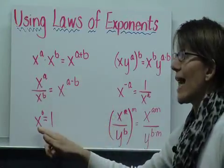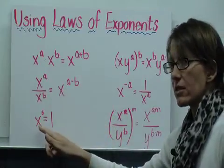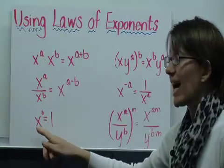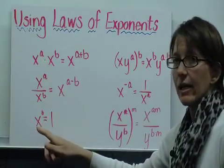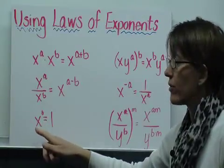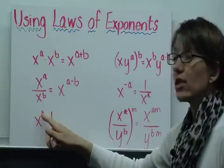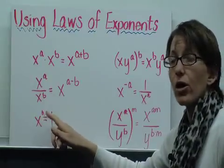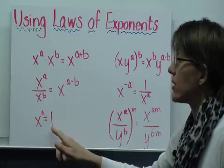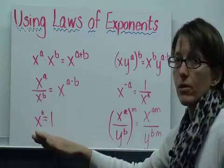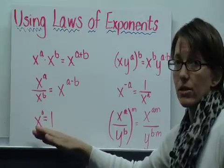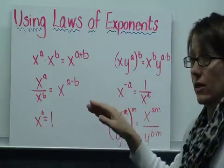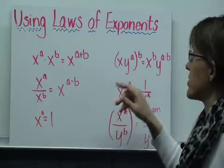Of course, any base — 2, 3, pi, negative square root of 3 — raised to the zero power is going to be equal to 1. Now do keep in mind, 0 to the zero power is not equal to 1; it's still equal to zero.